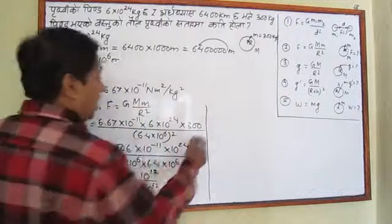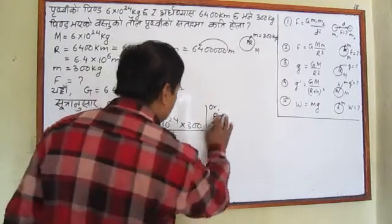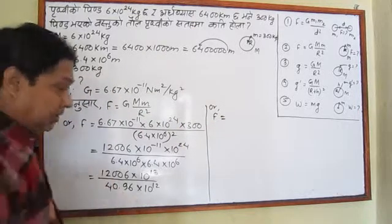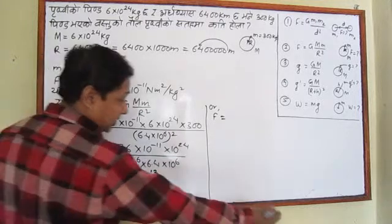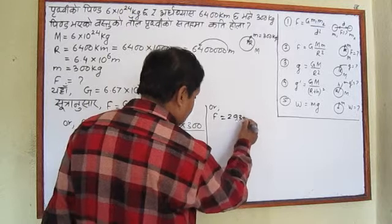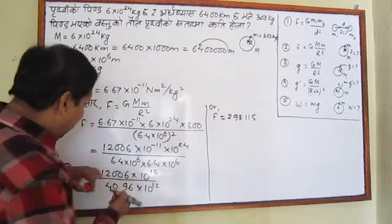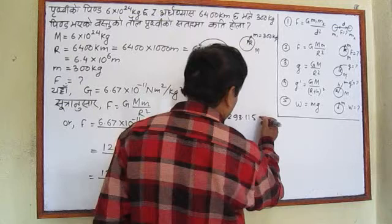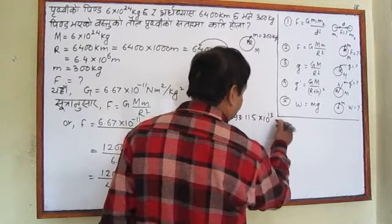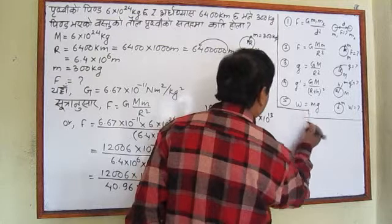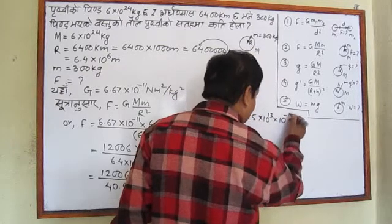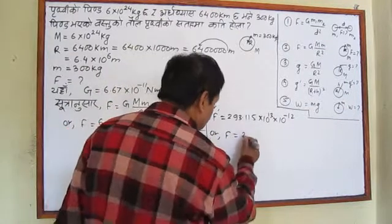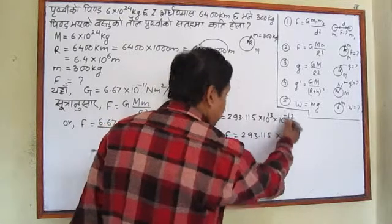Now here we compute: in the numerator, 6.67 multiplied by 6 multiplied by 300 gives 12006. Dividing by 40.96 gives approximately 293.115. The power of 10 works out: 10 to the power minus 11 into 10 to the power 24, divided by 10 to the power 12, gives 10 to the power 1. So F equals 293.115 into 10 to the power 1.